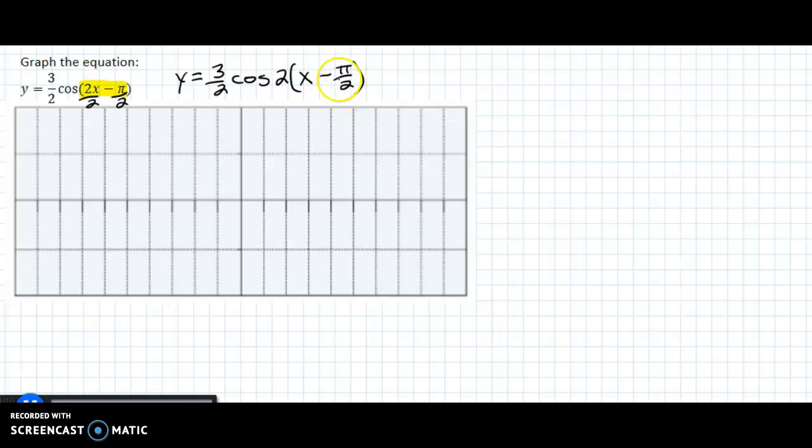And now we can just look at and see our phase shift. If you don't want to do it this way, you don't have to. You can set this part in the highlighted yellow, you could set that equal to 0 and solve for your phase shift.